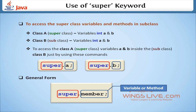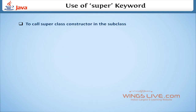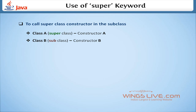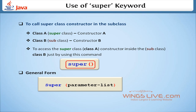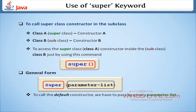The second purpose of the keyword super is to call a superclass constructor in the subclass. Consider class A is the superclass that has constructor A. Then class B is the subclass that also contains its own constructor B. We can access the superclass constructor inside the subclass using the super keyword. The general form is super(parameter list), where the parameter list is the list of parameters required by the constructor in the superclass. If we want to call the default constructor, we have to pass an empty parameter list.